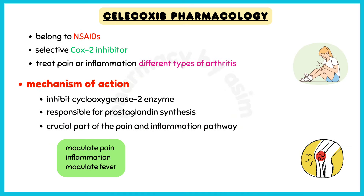Talking about the mechanism of action: Celecoxib works by inhibiting the cyclooxygenase-2 enzyme. Cyclooxygenase is responsible for prostaglandin synthesis, which is a crucial part of the pain and inflammation pathway. Prostaglandins have a major role in modulating pain, inflammation, and fever.